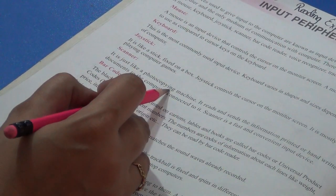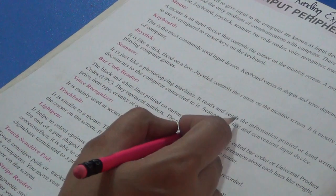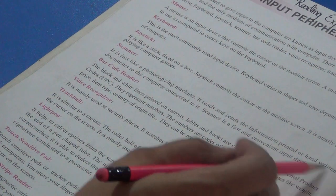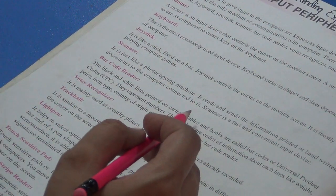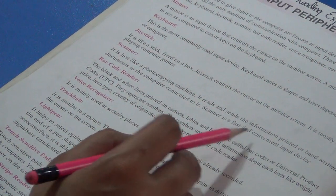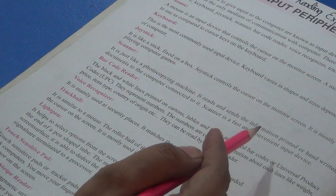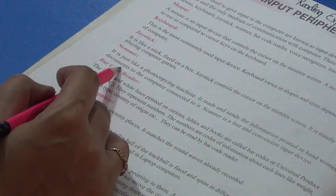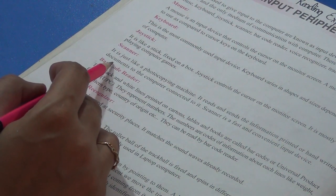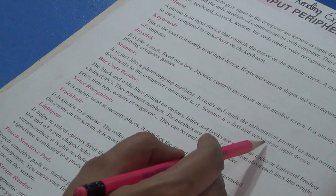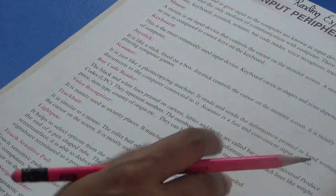Scanner. It is just like a photocopying machine. It reads and sends the information printed on or handwritten document to the computer connected to it. If you have any picture or information and you want it on the computer, you place it on the scanner which is connected to the computer, and you can see the document on the monitor screen. Scanner is a fast and convenient input device. You can easily use it.